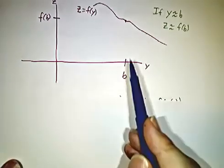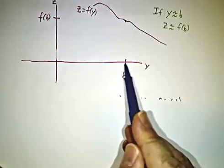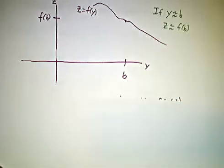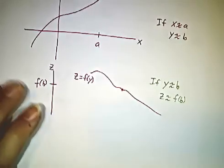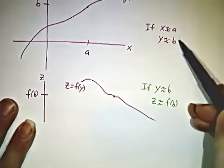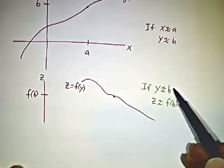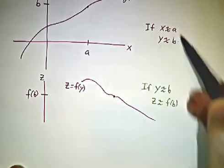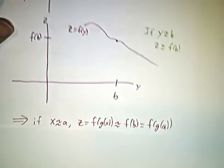Now, we said that f was continuous at b, so if y is close to b, then f(y) is close to f(b). So if x is close to a, then y is close to b. And if that y is close to b, then z is close to f(b). So if x is close to a, z is close to f(b). And we're done.